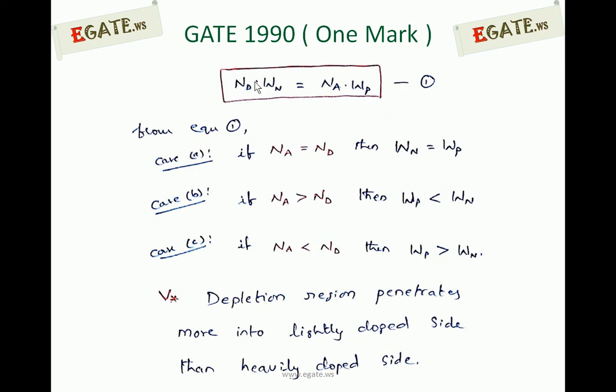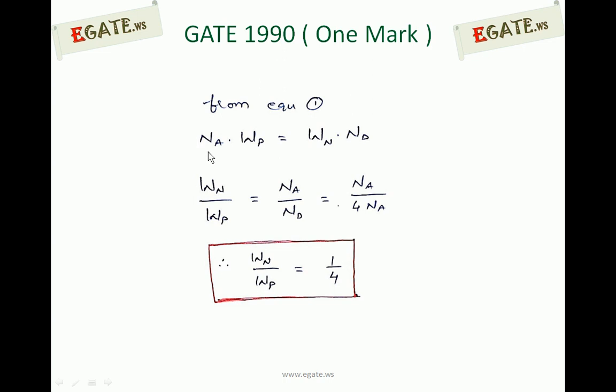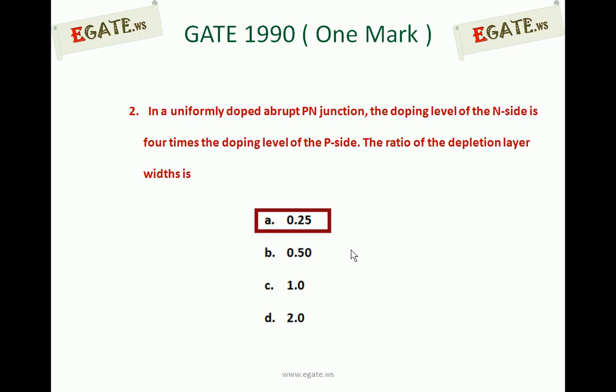From equation 1: NA × WP = WN × ND, so WN/WP = NA/ND. Given ND = 4NA, we get WN/WP = NA / (4NA) = 1/4 = 0.25. The important conclusion to remember is that NA × WP = WN × ND, meaning the depletion region penetrates more into the lightly doped side. The correct answer for the given question is 0.25. Thank you.